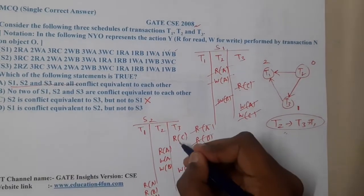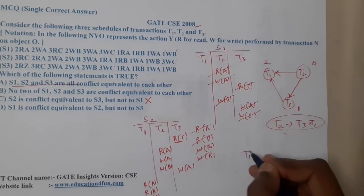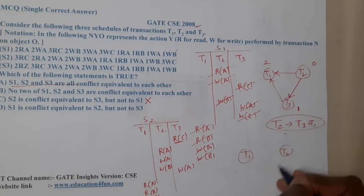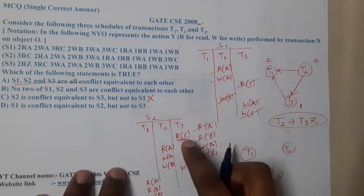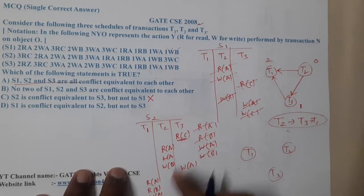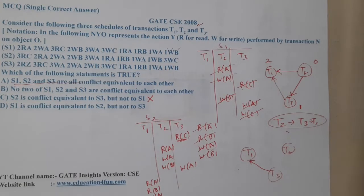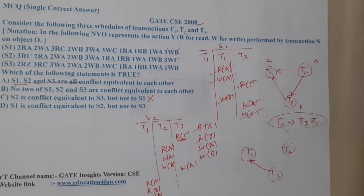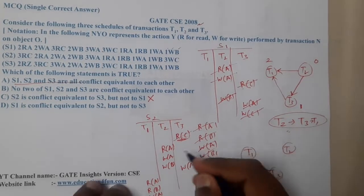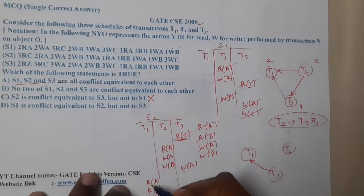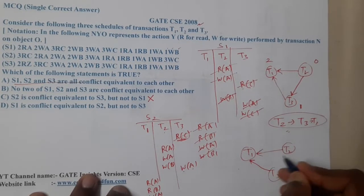Once I observe this, the Read C will clash with Write C — so there is an edge from T3 to T1. Moving on: Read A and Write A appear multiple times, so T2 will clash with everyone — edges going both ways from T2. Once we get two edges from T2, all are covered, so there is no need to check the rest.